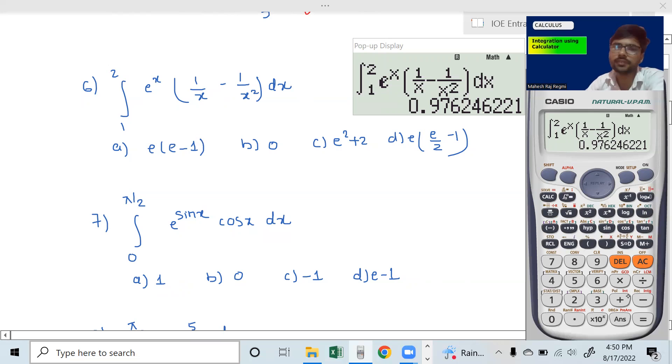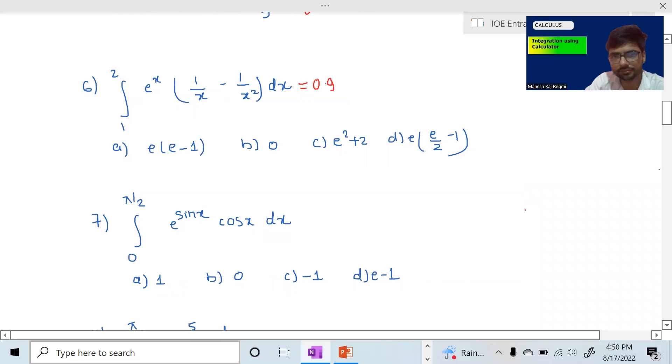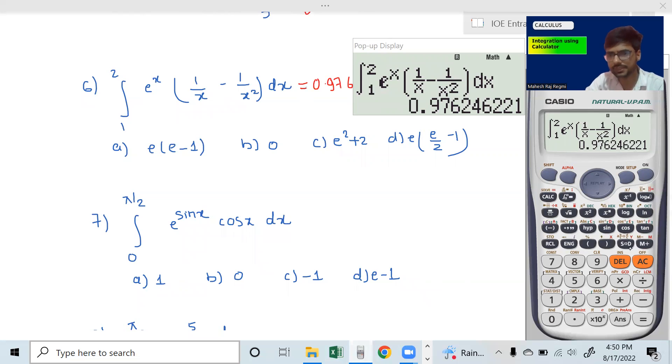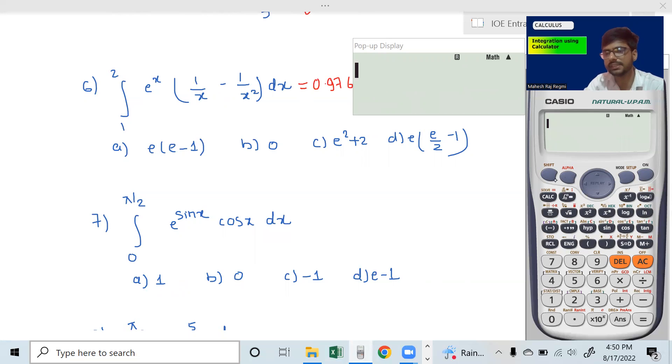Integration from 1 to 2 gives 0.9765. What option is 0.9767? Option A is E minus 1. Shift LN gives 1 power 1.